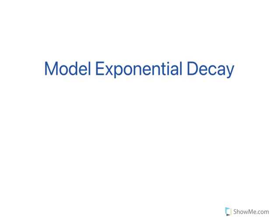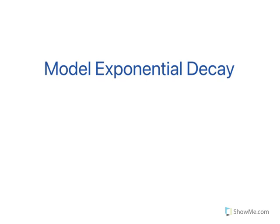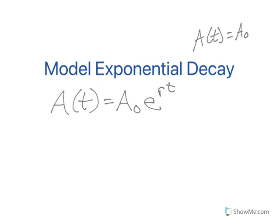Let's model some exponential decay. So my exponential decay formula is A(t) = A₀e^(rt). You may also see this as A₀e^(kt), where k just replaces the r. It kind of depends on a preference of how people like to do that.